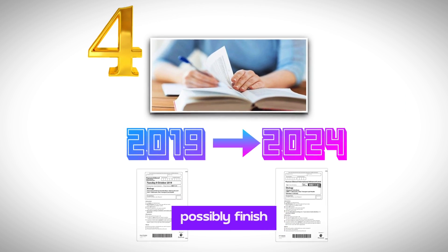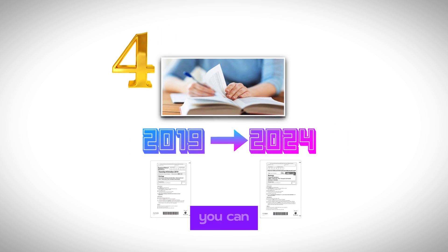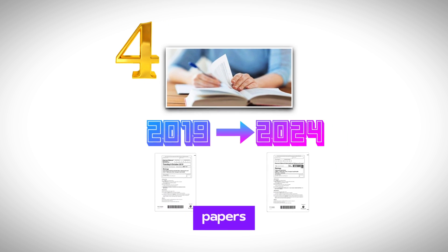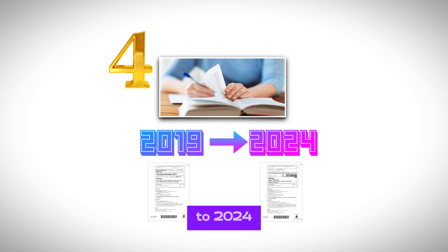You can possibly finish the entire AS Biology within six weeks, and once you're done with this, you can now solve full exam papers. I recommend solving papers from 2019 to 2024.